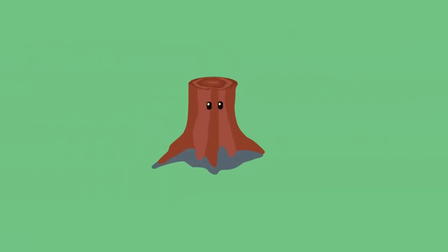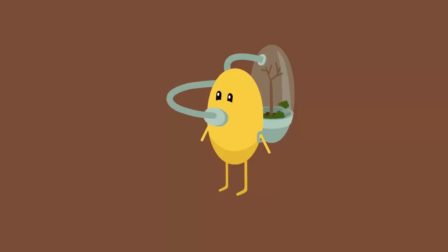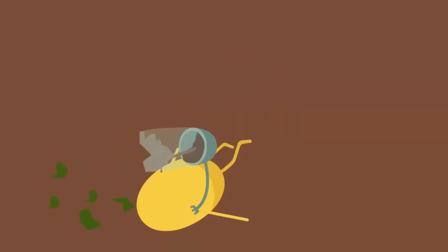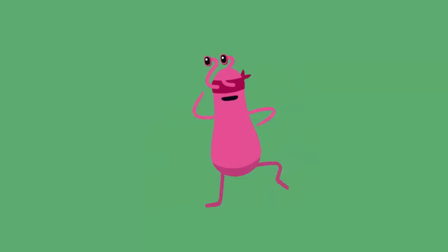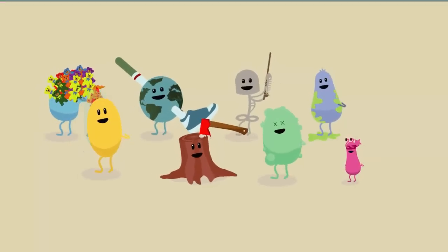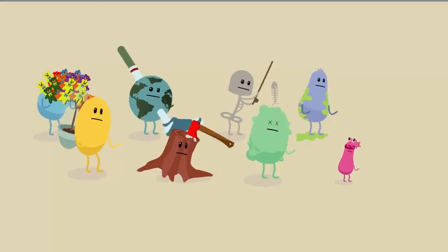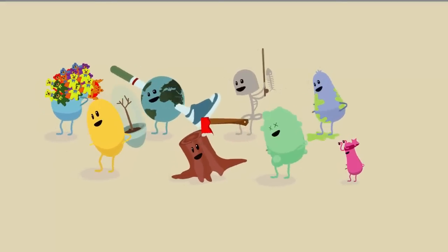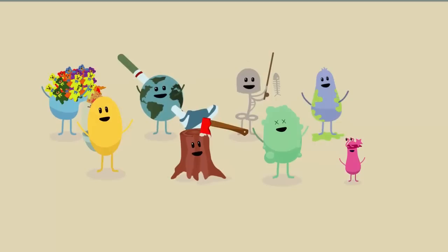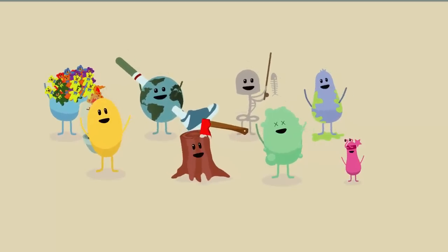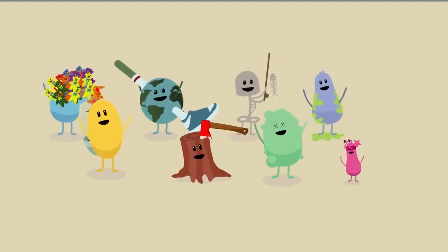Chop down all the planet's trees until there's nothing left to breathe. Spill toxins in our waters. Produce mutant ninja daughters. Dumb ways to die. So many dumb ways to die.